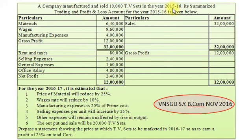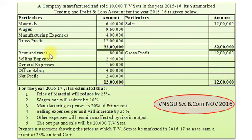In the year 2015-16, the company manufactured 10,000 TV sets and sold them. So there is no closing stock of TV sets at the end of the year, and there is no opening stock in the beginning of the year. We are given Material Cost, Wages Cost, and Manufacturing Expenses. Rent and Taxes, General Expenses, and Office Salaries — these three will be clubbed and considered as administrative overheads. And finally, we have Selling Expenses.